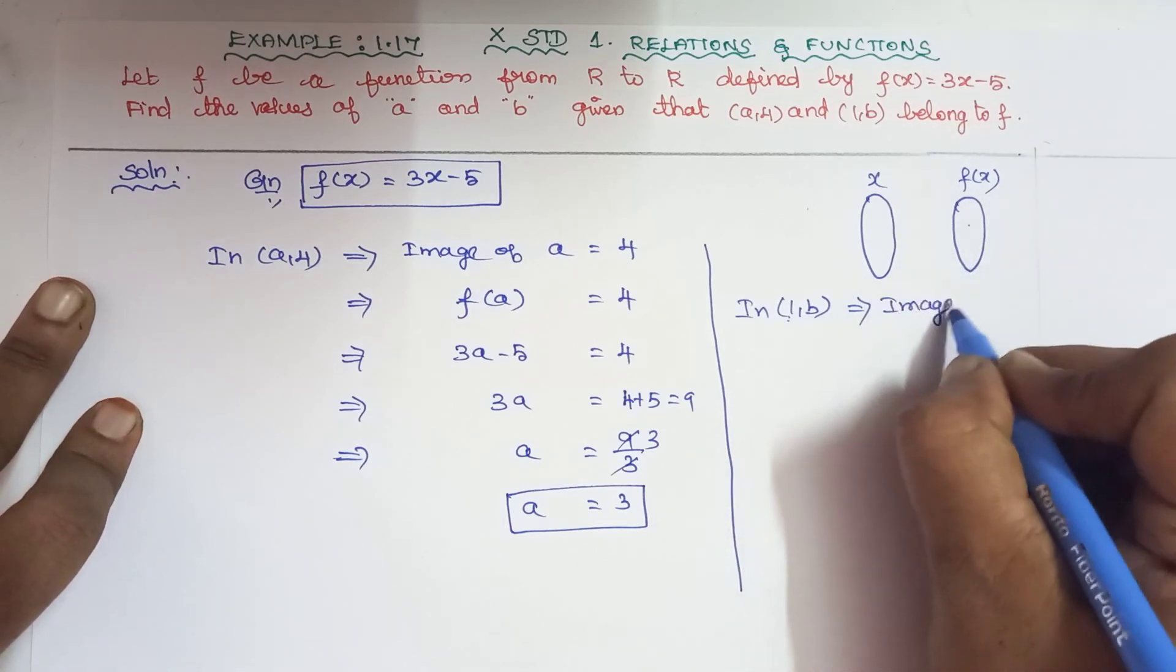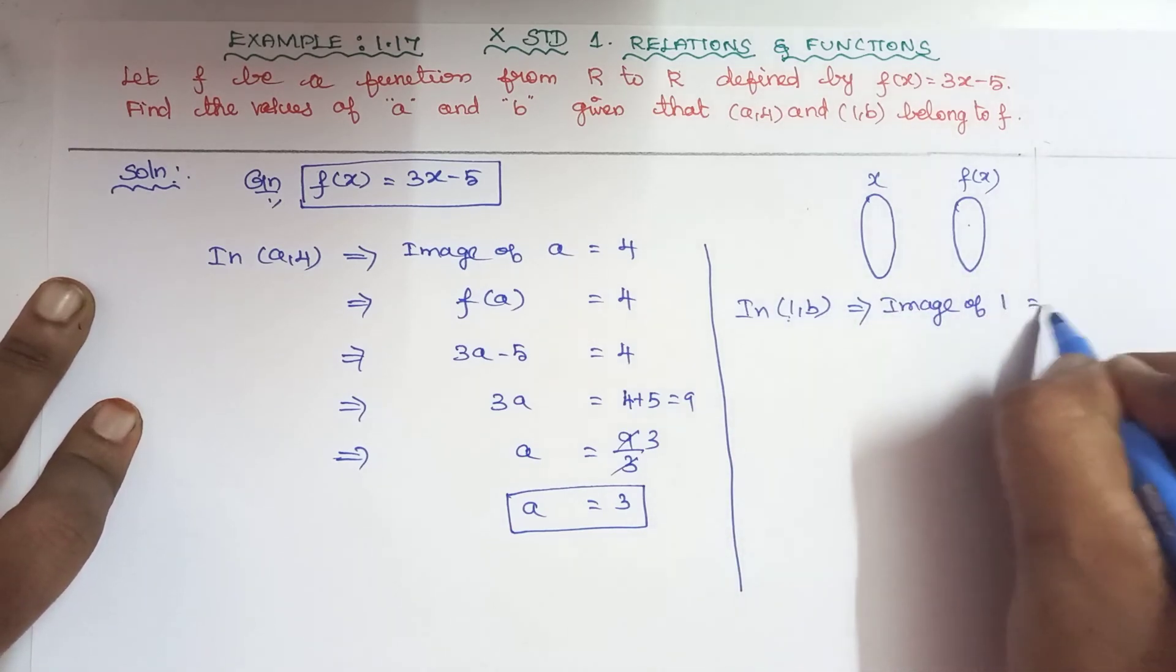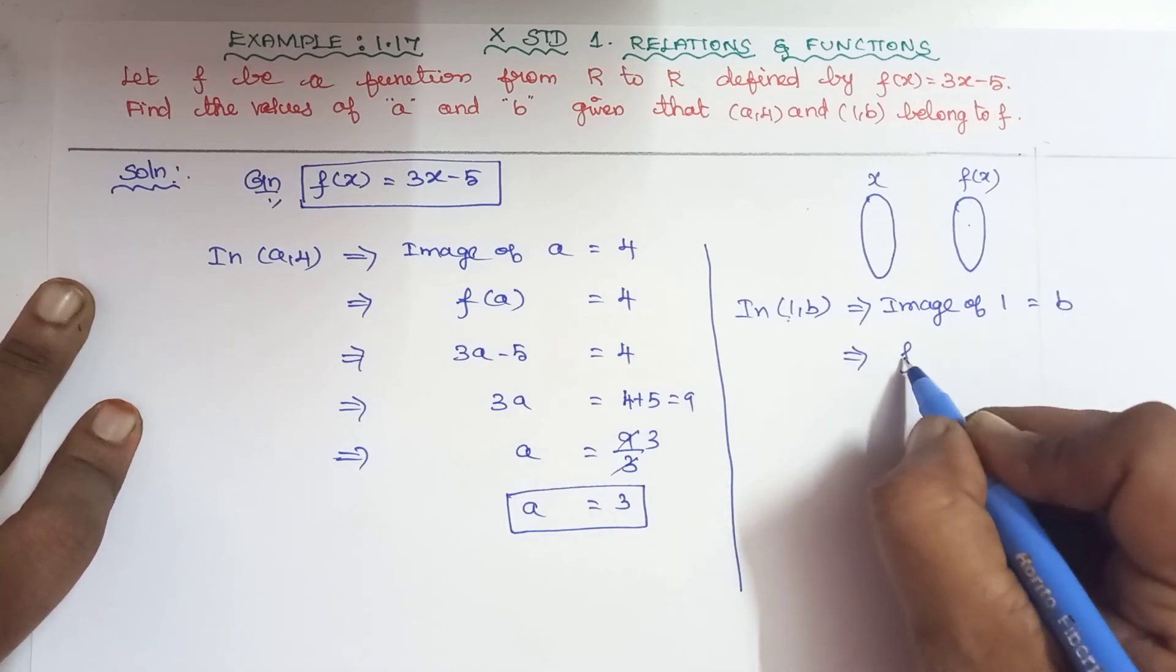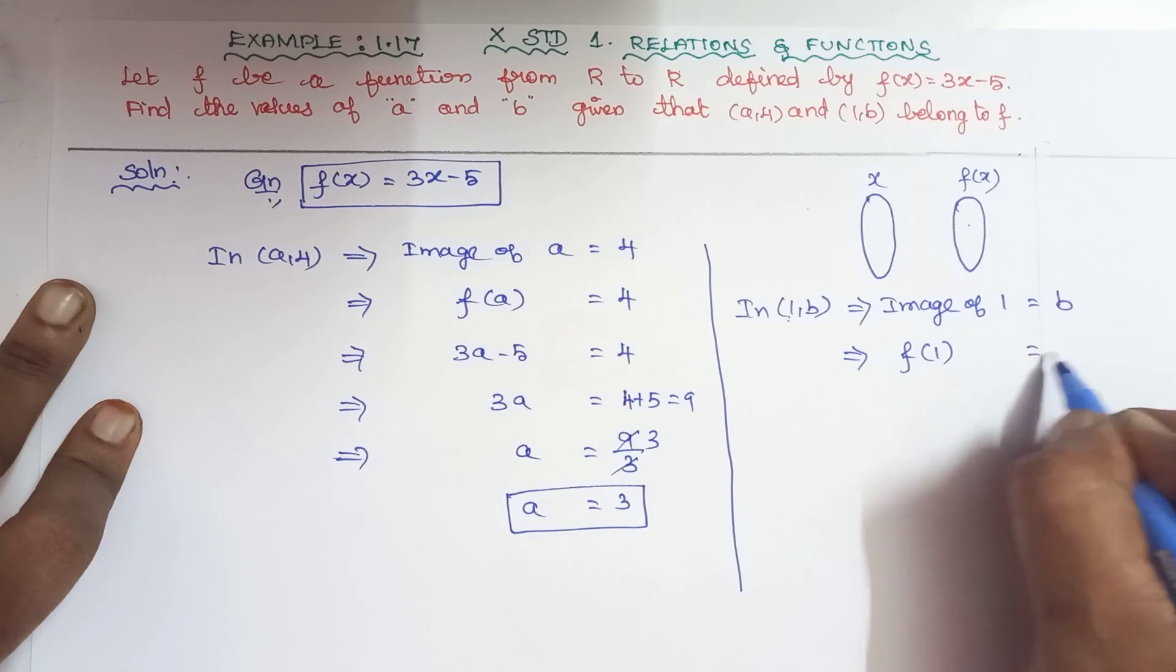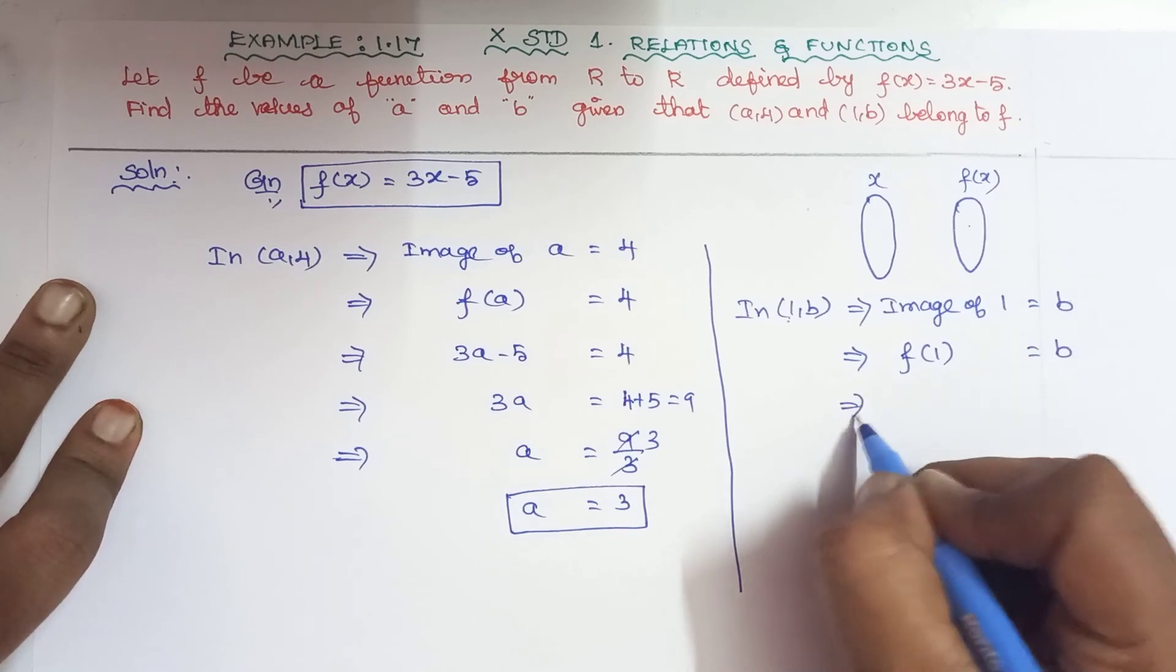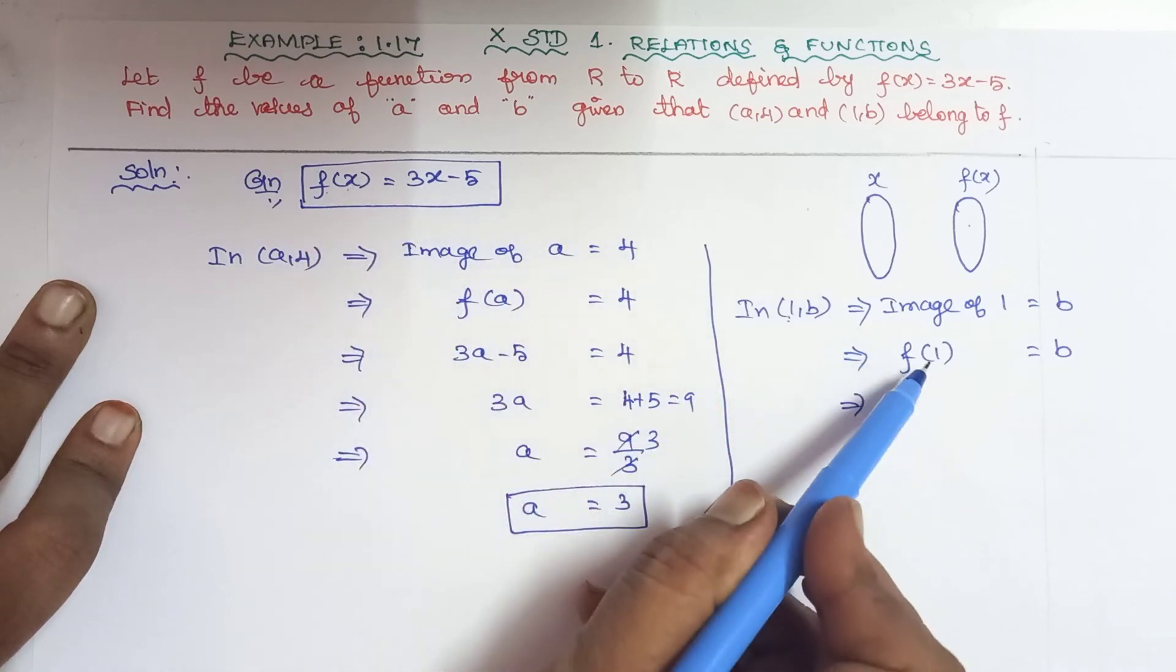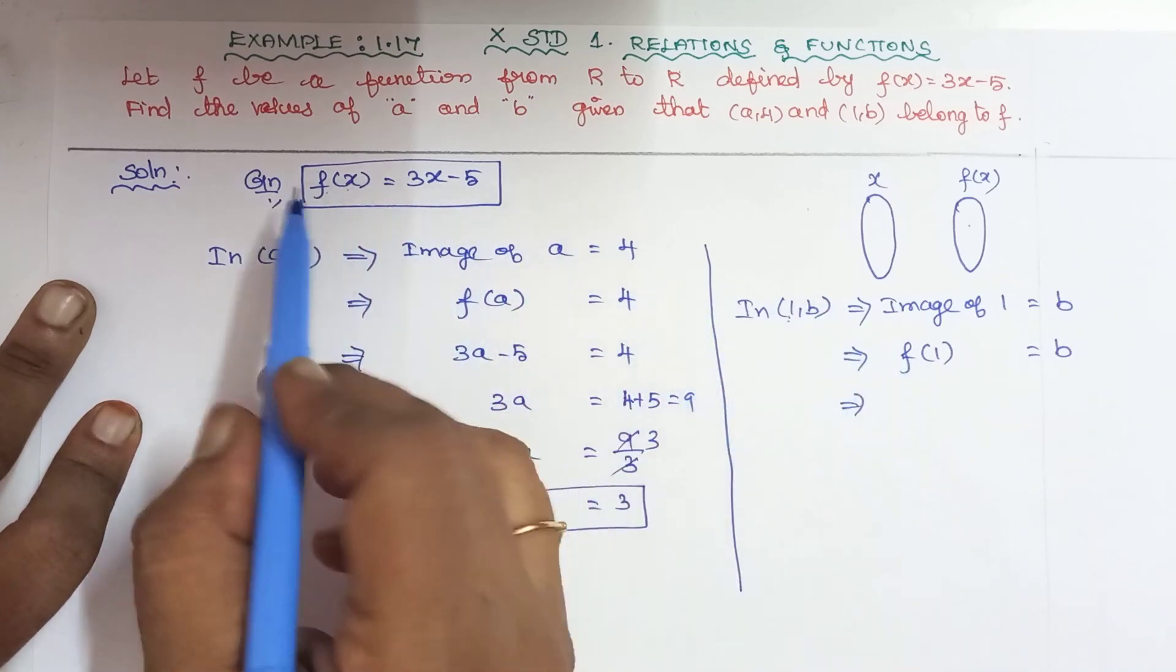Image of 1 is equal to b. We can write f(1) = b. Again, in the relation f(x), x is substituted with 1.